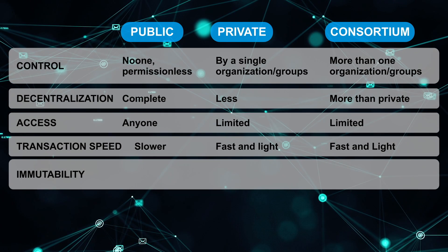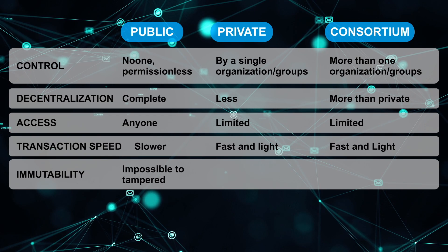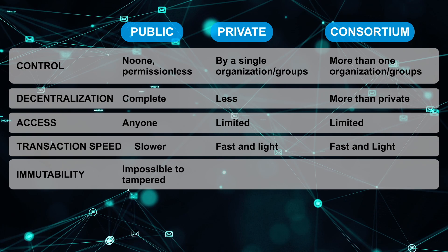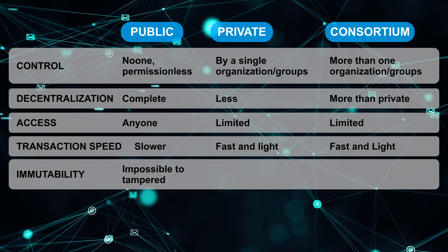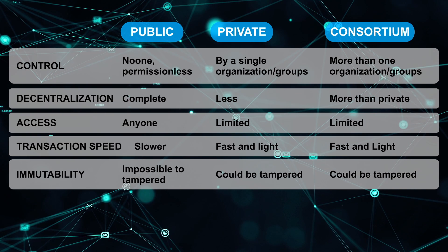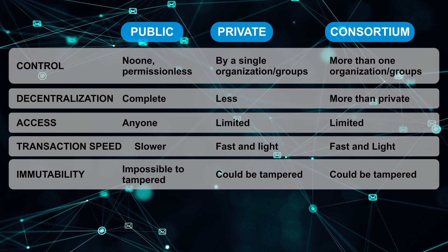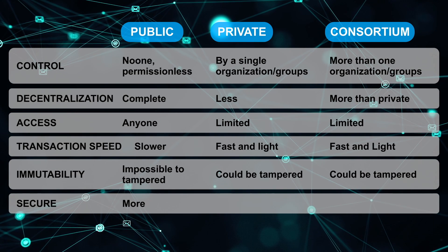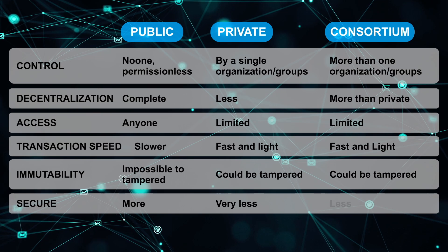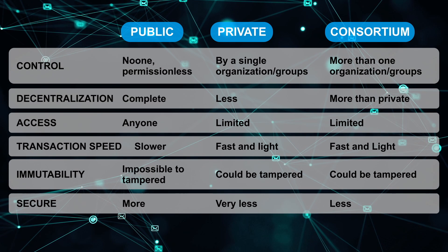On the fifth point we have immutability. In public blockchain, it is almost impossible to tamper data since it is controlled by no one. Whereas there is a chance of tampering in private and consortium blockchain. Similarly, public blockchains are more secure, private blockchains are less secure, and consortium blockchains are a little more secure than private blockchain.